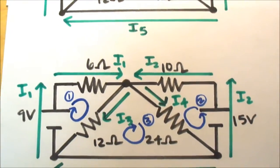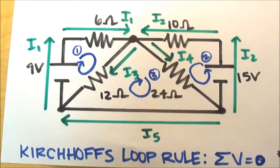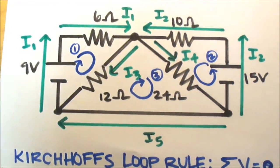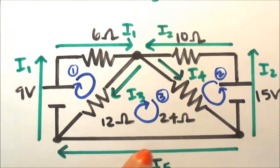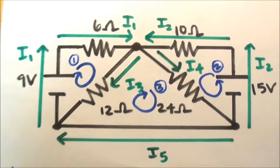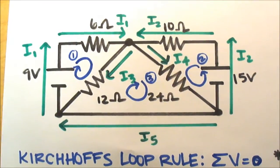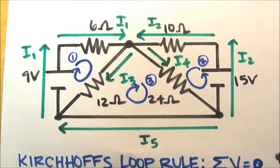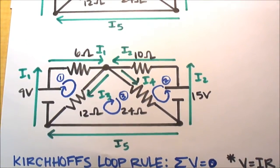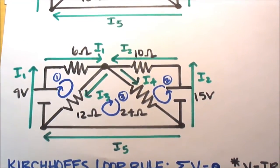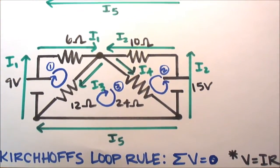Next we're going to use Kirchhoff's loop rule and draw in loops. As you can see here I drew in loop 1 here, loop 2 over here, and loop 3 over here. Basically what Kirchhoff's loop rule means is that the voltage all the way around a loop is going to be equal to zero. Since not all the voltages are explicitly given to us, we have to also use the equation voltage equals current times resistance.